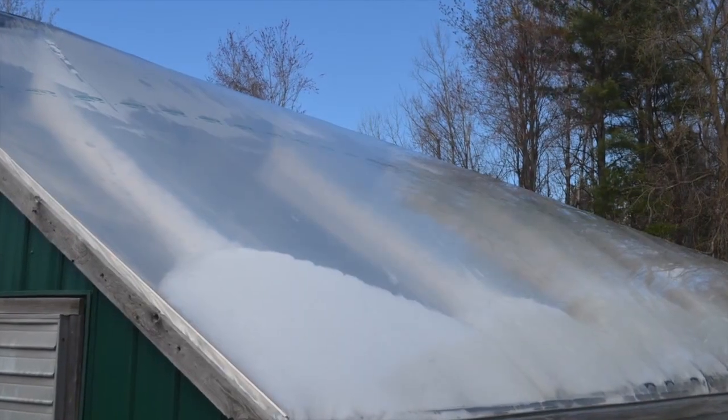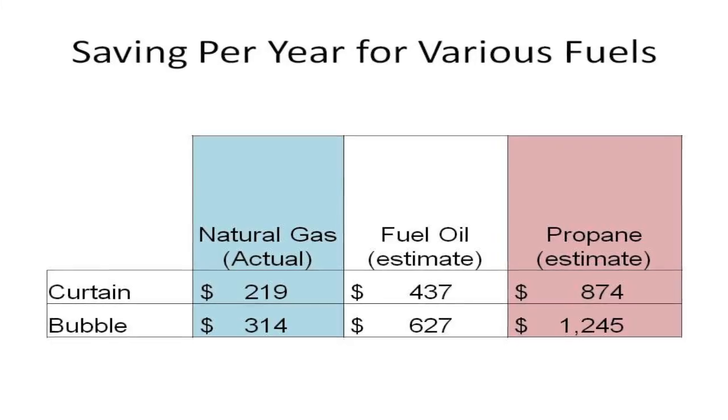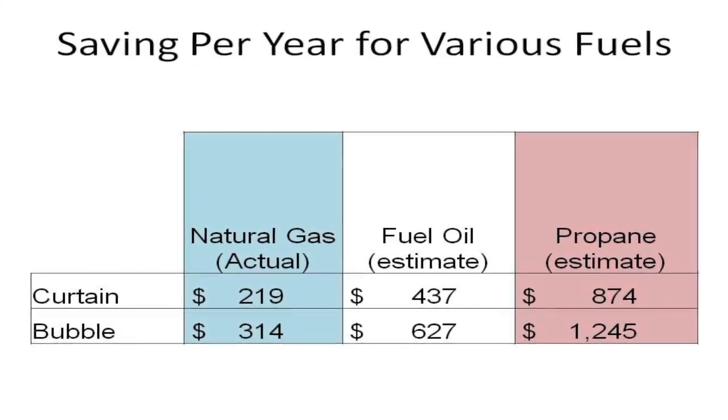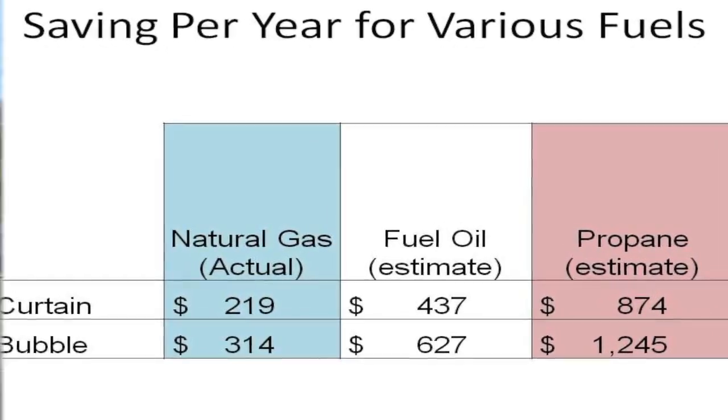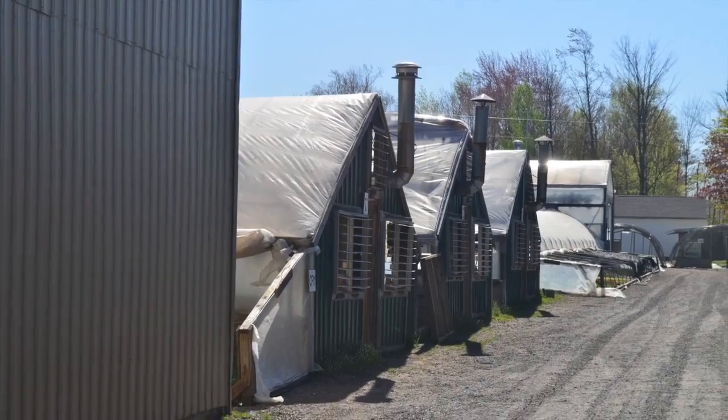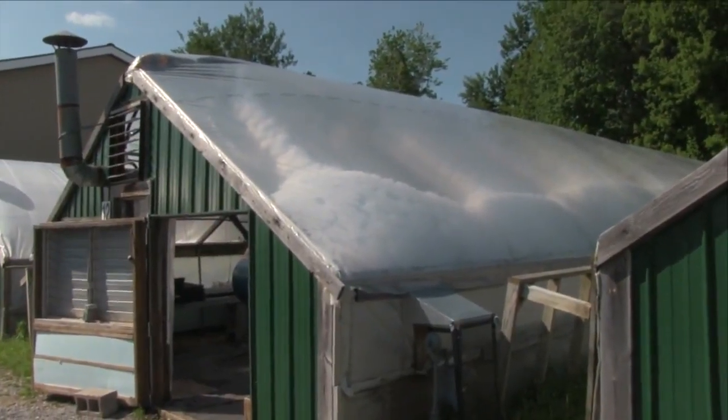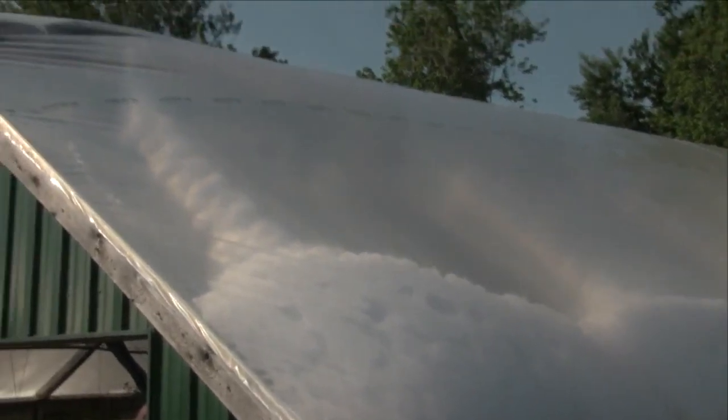So what can we conclude about the increased efficiency of these two insulation systems? Compared to the control or uninsulated greenhouse, the bubble house used an average of 40% less energy to heat. The actual cost savings in our case was about $800 to $900 per year using natural gas, but these savings would likely be four times greater for propane and twice as much for fuel oil.